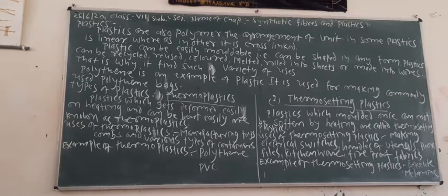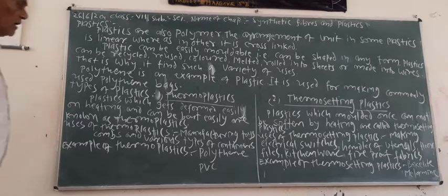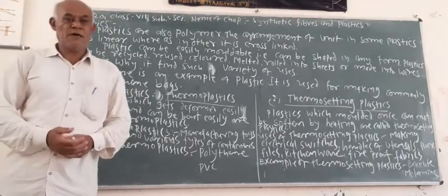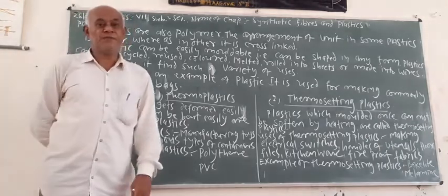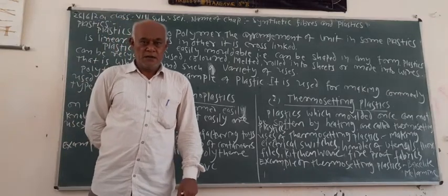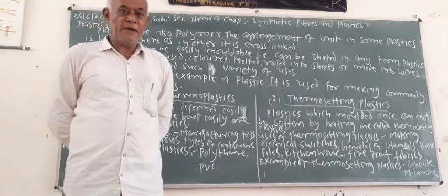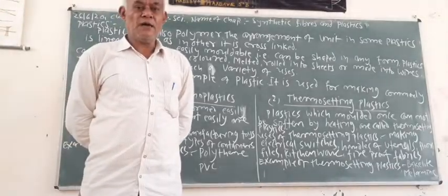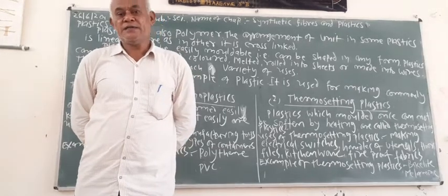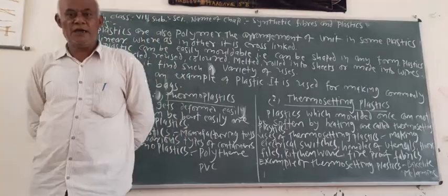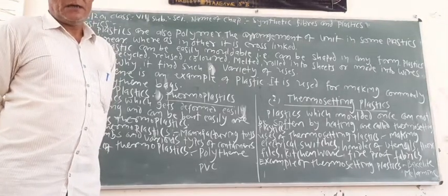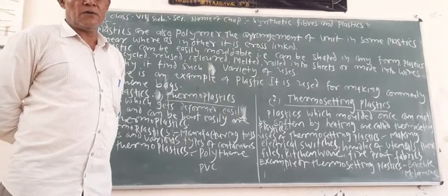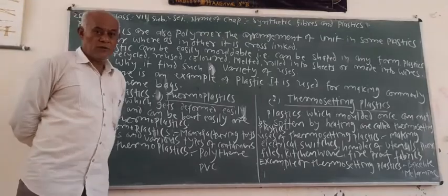Examples of thermoplastic: we already learnt about polythene, which is commonly used for polythene bags. Another example of thermoplastic is PVC — the full form of PVC is polyvinyl chloride. PVC pipes are used for plumbing work, and PVC is also used for domestic electrical wiring in our houses.